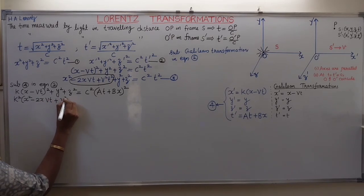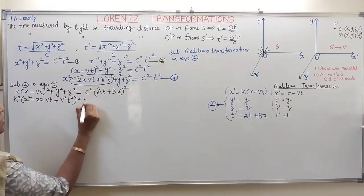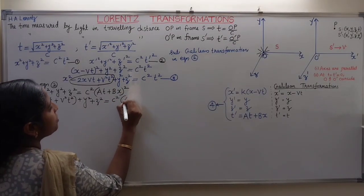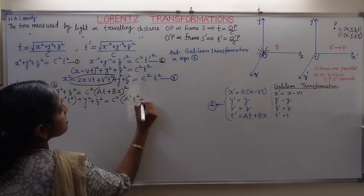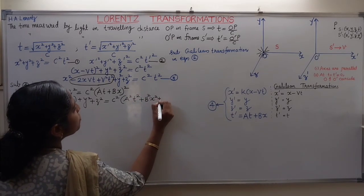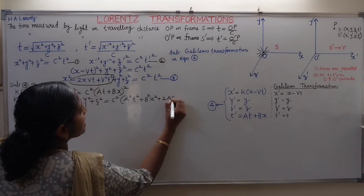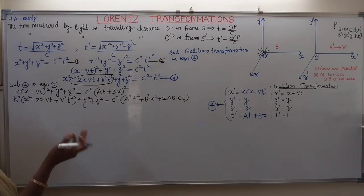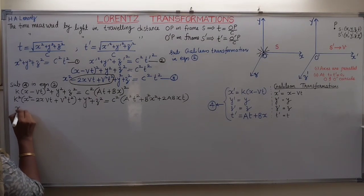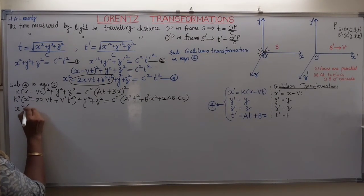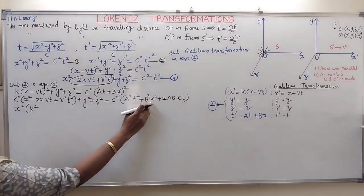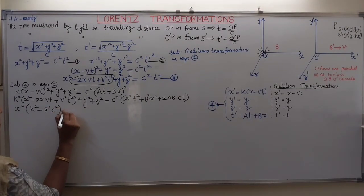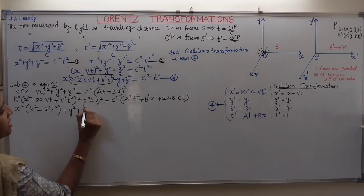Now we substitute these modified equations into equation 2. So x' = k(x − vt), giving [k(x − vt)]², plus y² plus z² equals c² times (at + bx)². Expanding: k²(x² − 2xvt + v²t²) + y² + z² = c²(a²t² + 2abtx + b²x²).